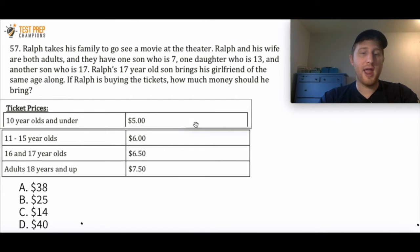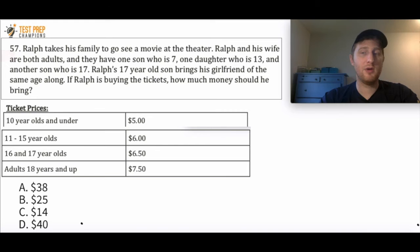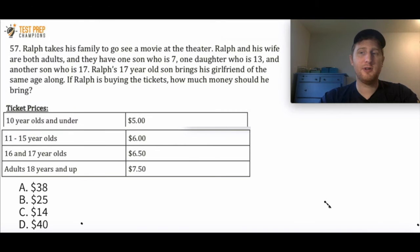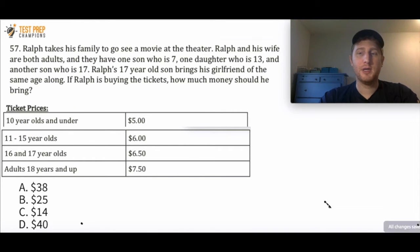The answer choices are A: 38, B: 25, C: 14, or D: 40. Pause the video and try this out. To get this right, we just have to use the words and write an equation. Ralph and his wife are both adults, so right off the bat we know there are going to be two adults attending.